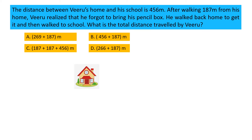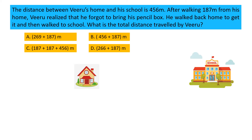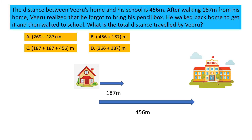This is Viru's home and this is Viru's school, and the distance between his home and school is 456 meters. After walking 187 meters from his home, Viru realized he forgot his pencil box. He walked back to his home to get it — that means he traveled 187 meters back. And then he walked to school.